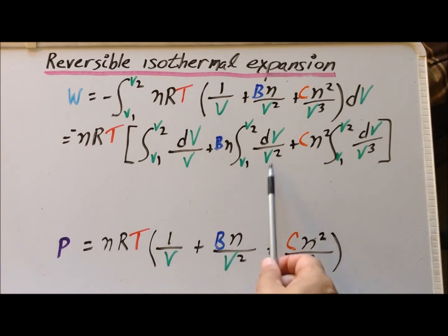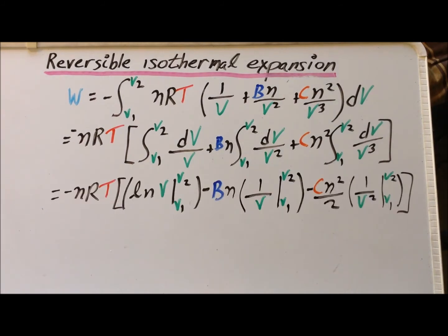So that gives us the following three integrals, each of which is not difficult to solve. Our first integral is dV over V, and we know the antiderivative there is simply the natural log of V. The second, one over V squared, is equivalent to V to the minus two power, so the antiderivative is minus V to the minus one power, or one over V.